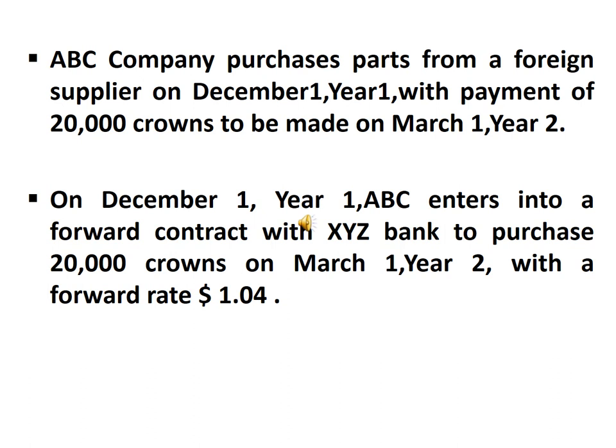On December 1st, Year 1, APC enters into a forward contract with XYZ Bank to purchase 20,000 crowns on March 1st, Year 2, with a forward rate of $1.04.